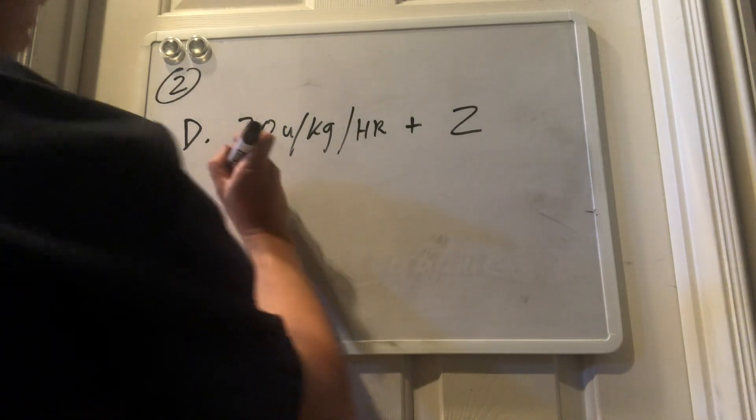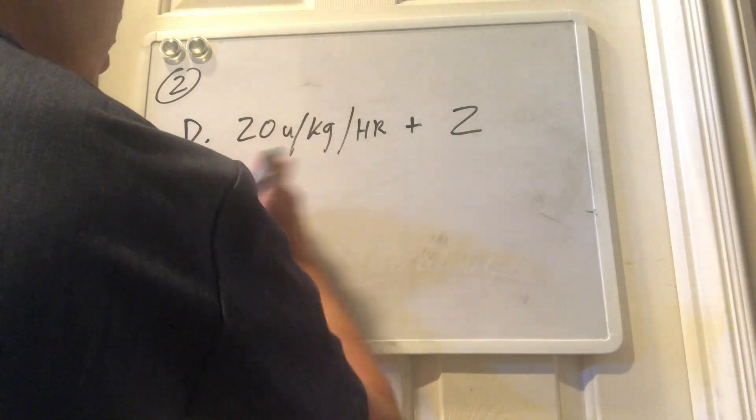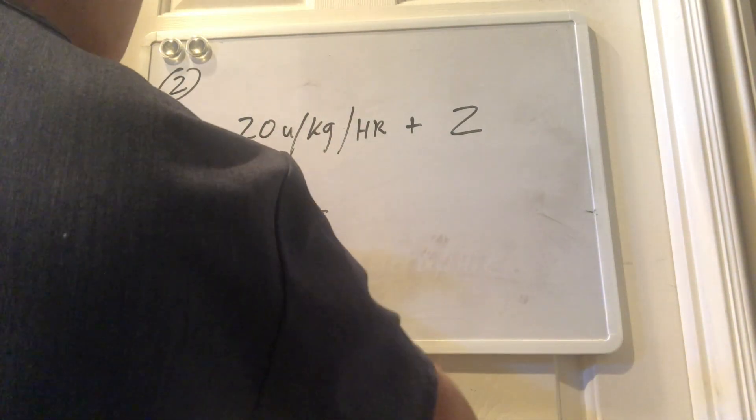All we're going to do is add 2. So when we're calculating the problem, we set it up like so. 22 units per kilogram over 1 hour.